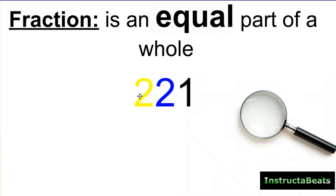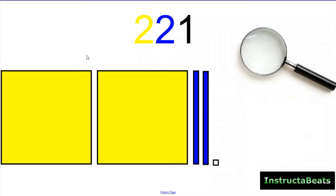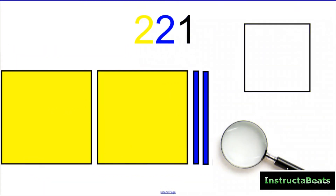So here we have a number, 221. If we wrote it using base 10 blocks, you'd have your 200s, you'd have your two bars or your two 10s right here, and then you'd have a one little cube for the ones place. When we're talking about a fraction, we want to zoom in on that one, and we're going to really look at splitting up this one whole into equal groups.